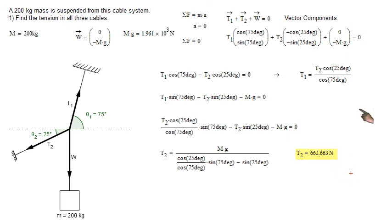And then from this equation up top, when we plug in T2, T1 equals T2 cosine 25 over cosine 75, we can calculate that T1 equals 2,320.4 newtons.